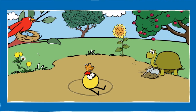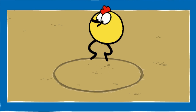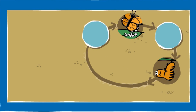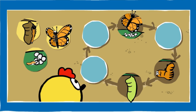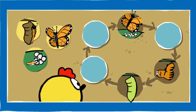Butterfly! Let's look at butterflies. Do you know how a caterpillar becomes a butterfly? Help Peep put things in the right order. Drag the pictures onto the spots in the circle where you think they go. Think about what happens first and what happens next.